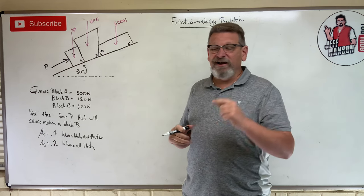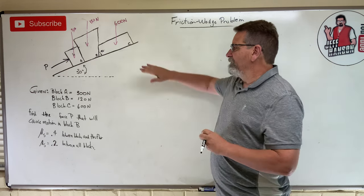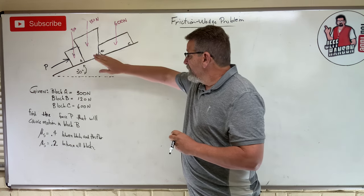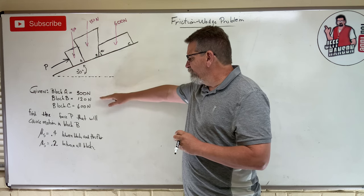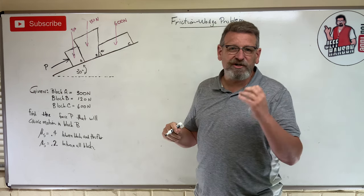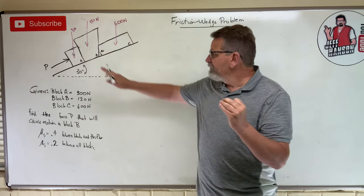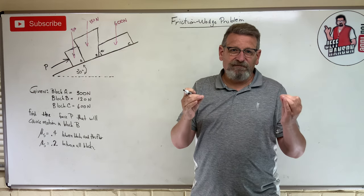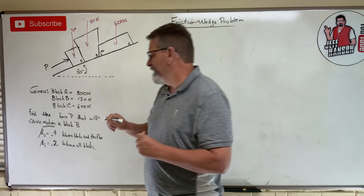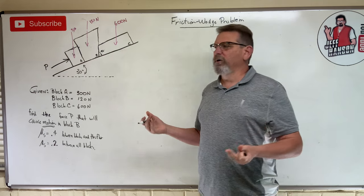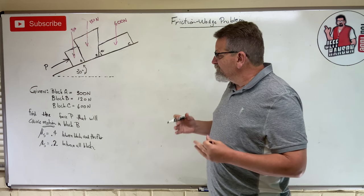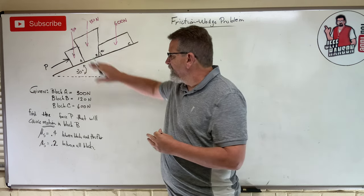Hopefully I'm here to clear the air. This is what we call a thought problem — professors love these. I have three blocks A, B, and C with weights of 300 N, 120 N, and 600 N. Find the force that will cause motion in block B. The key word here is 'motion' — what scenarios of motion do we have where block B moves?